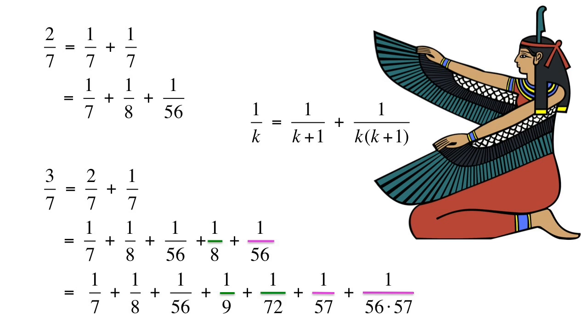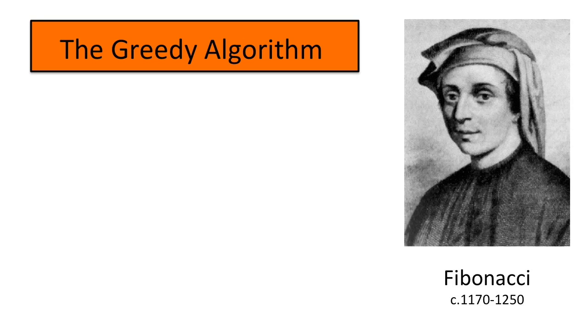Another approach to getting an Egyptian fraction is to use the greedy algorithm due to Fibonacci. The idea is to first subtract the largest possible unit fraction. For example, the largest unit fraction which is less than four over six twenty-five is one over one fifty-seven.